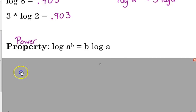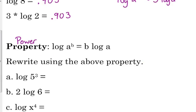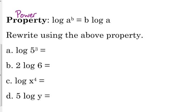So let's look at actually using this property a little bit. We're going to rewrite these logarithms right here using the above property. Sometimes we're going to move the exponent. Sometimes we're going to move a coefficient. So log of 5 cubed can be rewritten as 3 log of 5. Sometimes it's helpful to move the exponent. Sometimes it's helpful to move the coefficient. So 2 log of 6 can be rewritten as log of 6 squared, which we know is also the log of 36.